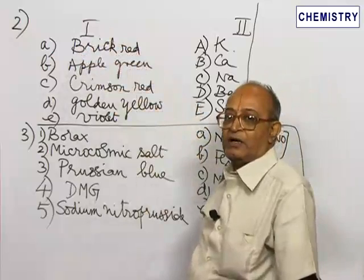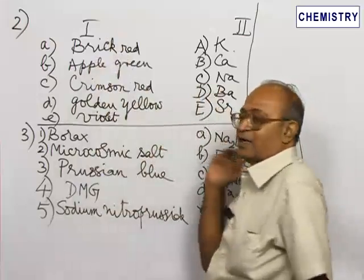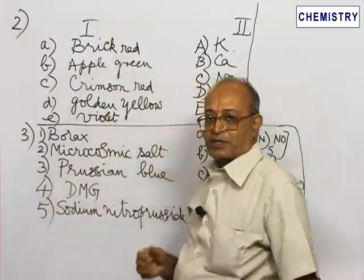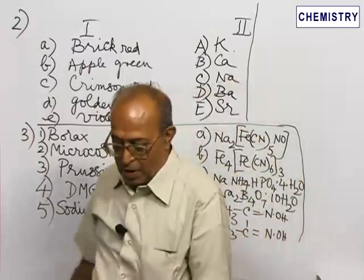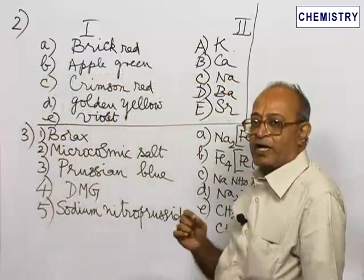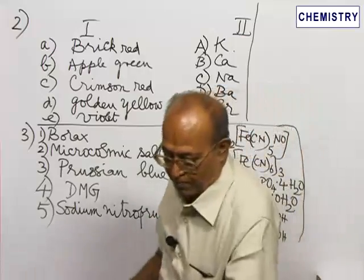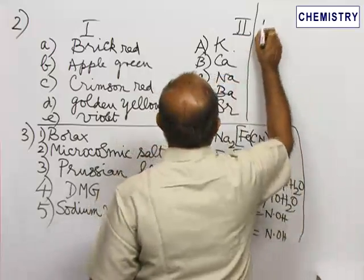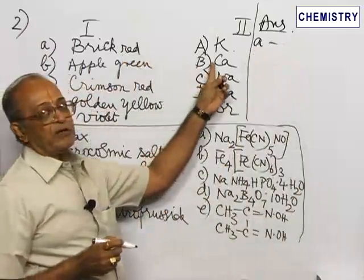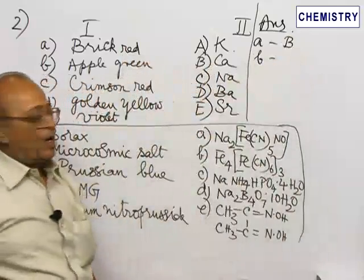For example, consider the first column showing flame color and the second column showing metallic ions to be matched. Brick red flame coloration: brick red usually indicates calcium salts, which will give a brick red coloration in the flame test. So for A, the answer is B — brick red corresponds to calcium.